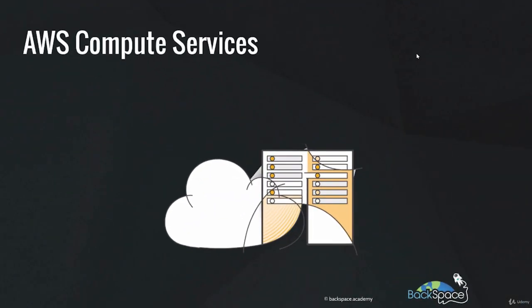Welcome back to Backspace Academy. In this lecture, we'll have a look at the compute and networking services of AWS. We'll then have a look at some examples, and finally we'll finish up with a hands-on lab where we're going to deploy a WordPress web server using the Amazon EC2 service.